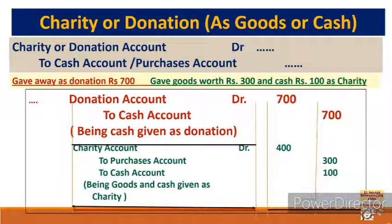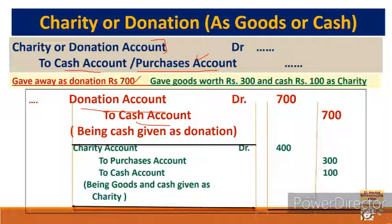Next: charity or donation — given as goods or cash. Charity or donation is an expense for the business. If goods are given as donation, goods go out — it is not a sale, so purchase account is credited (goods leaving reduces purchase). If cash is given, cash account is credited. Charity/donation account is always debited as it is an expense. Example: gave away as donation rupees 700 cash — charity account debit to cash account credit 700.